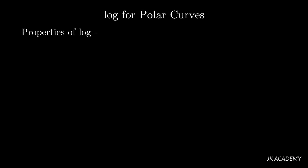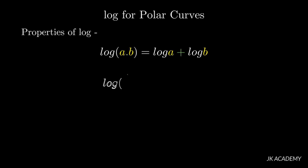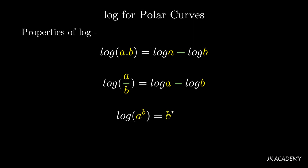First property: log(a × b) = log a + log b. Property number two: log(a / b) = log a − log b. Third property: log(aᵇ) = b · log a.